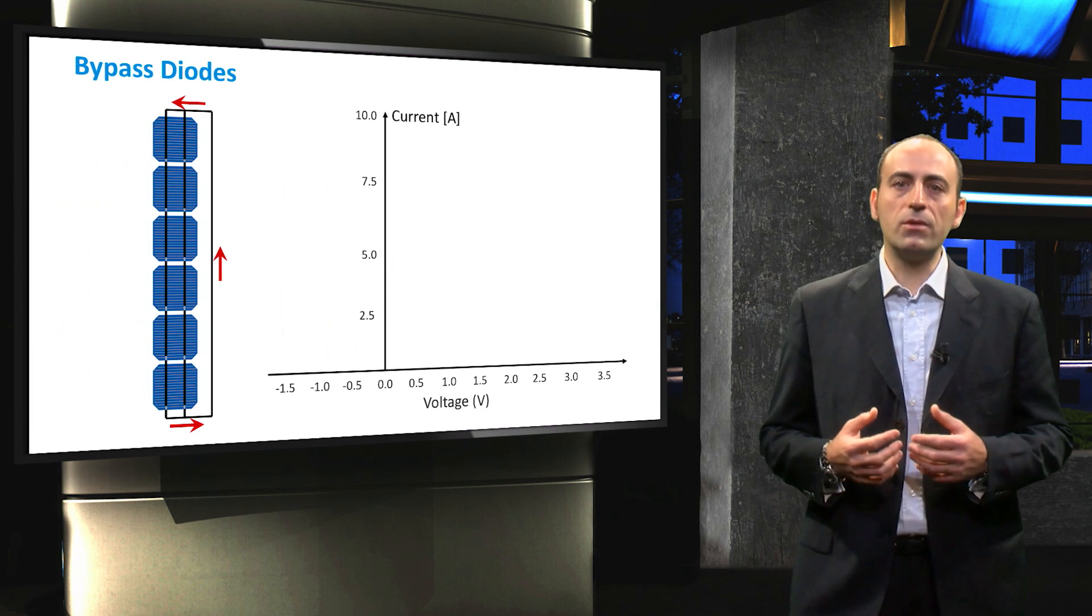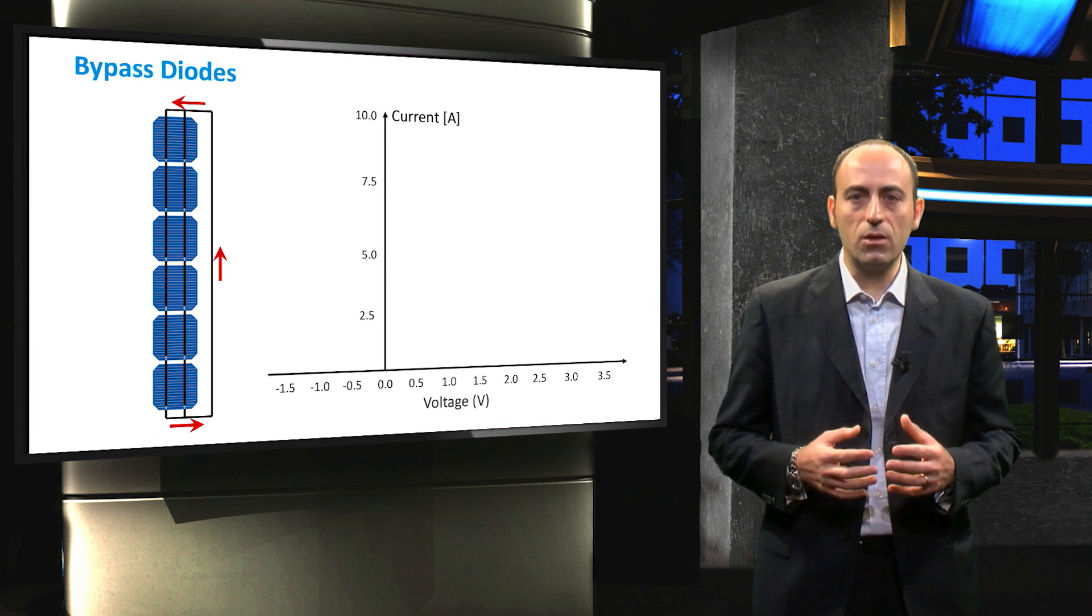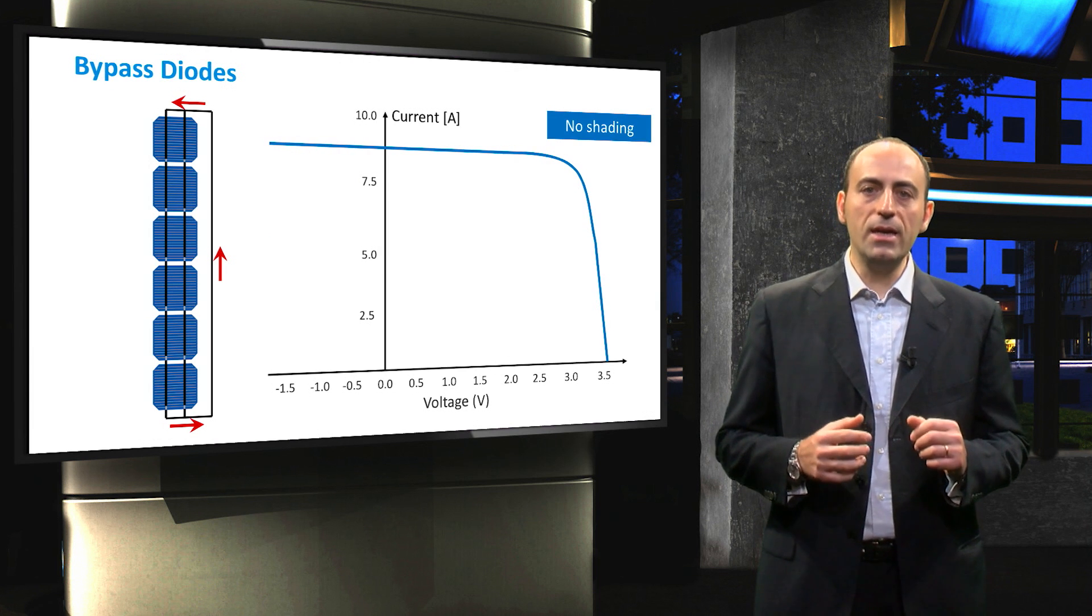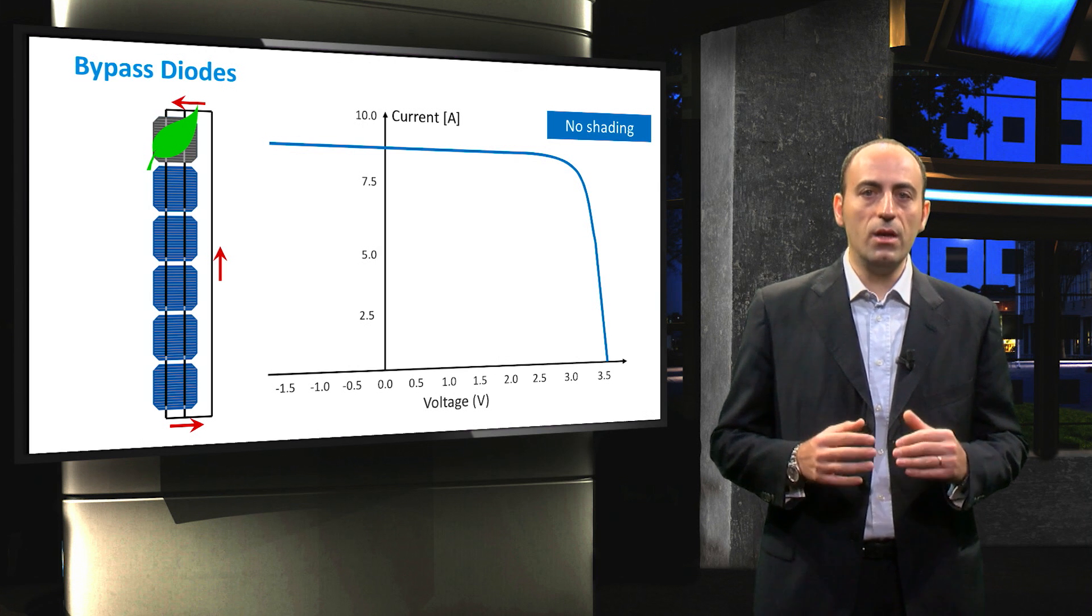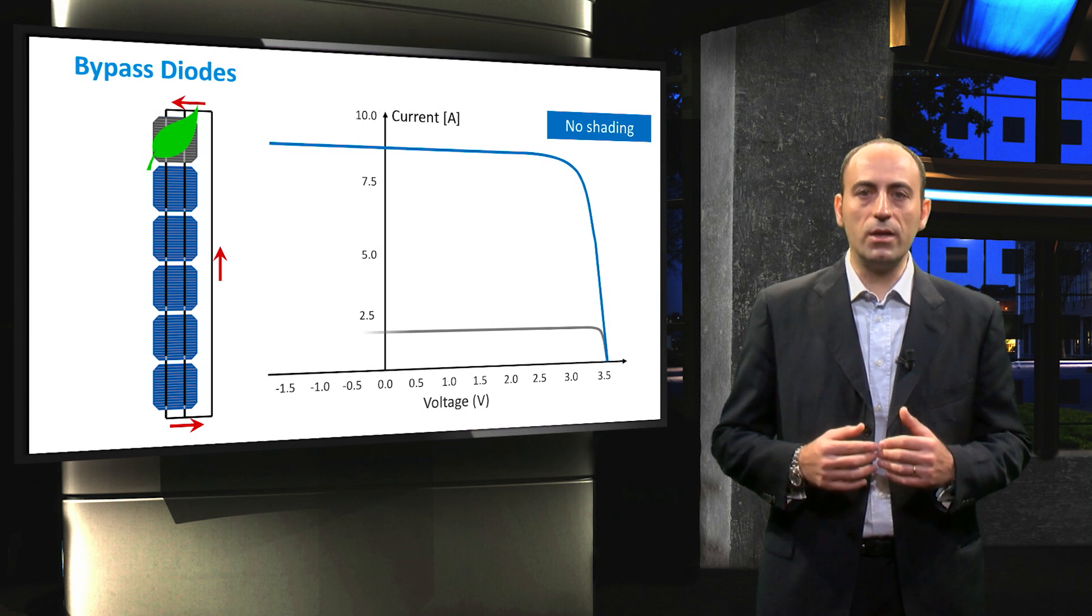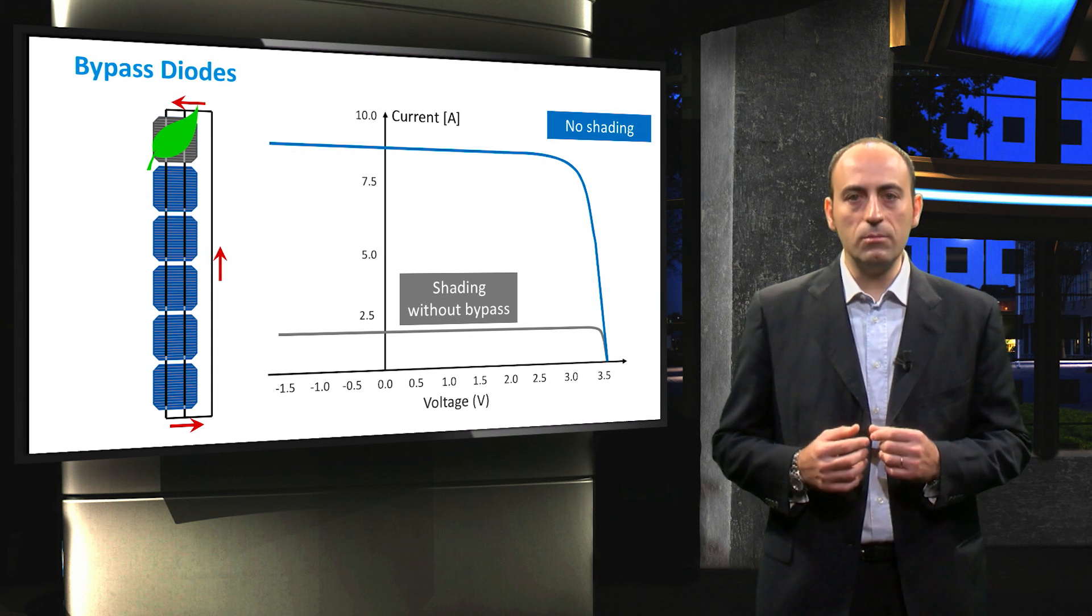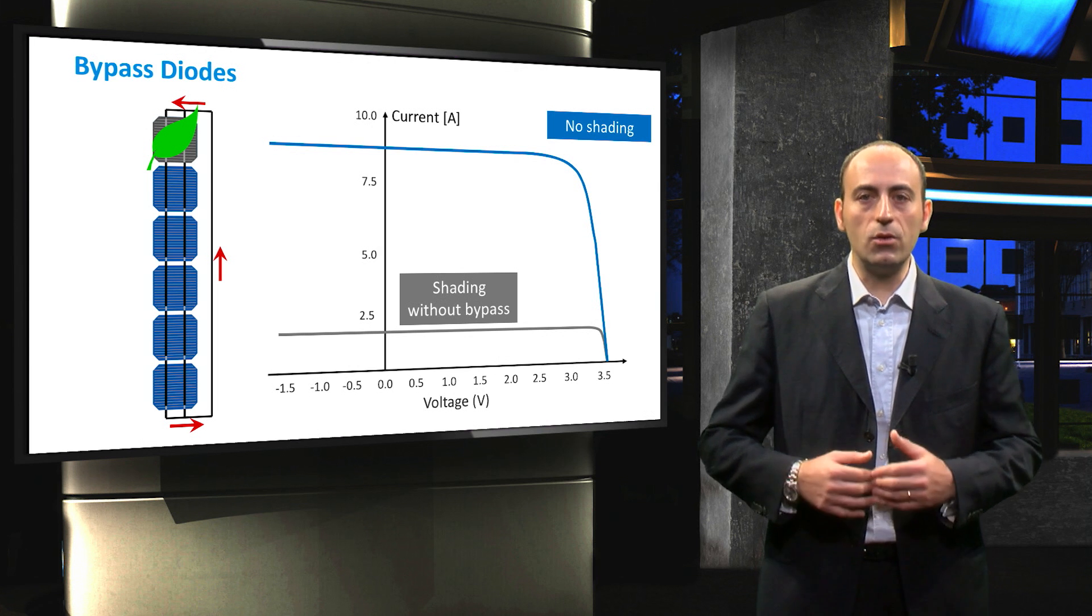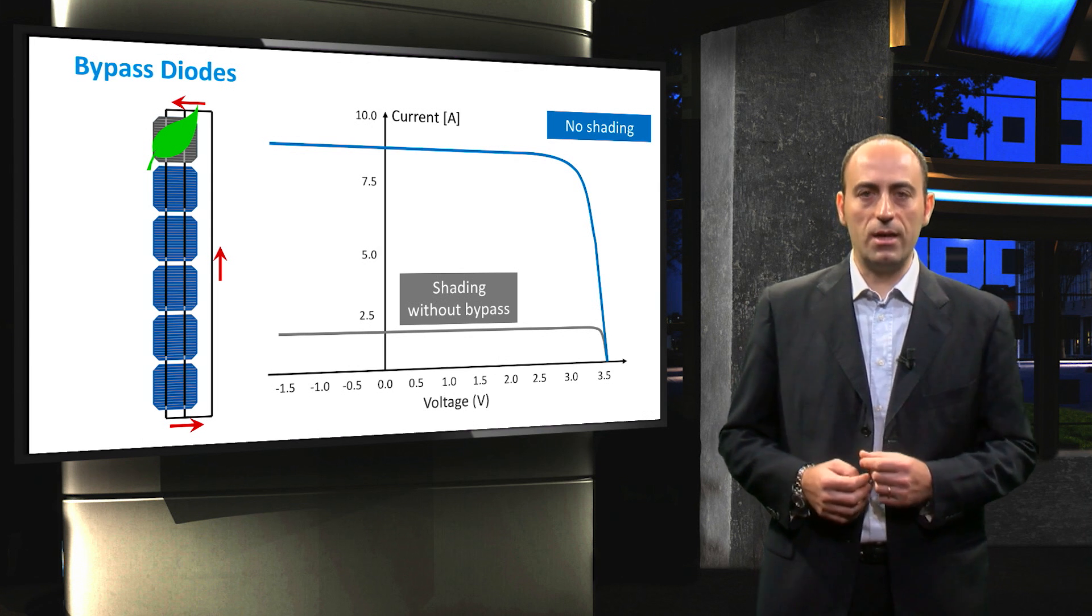Let's come back to the example shown at the beginning of the lecture and let's draw the IV characteristic of the string when cells are equally illuminated. In case one cell is completely shaded and there is no bypass diode, then the total current voltage characteristic just drops down with a total voltage that is more or less the same, but the maximum current is dictated by the partially shaded cell. In order to prevent that all the excess current would dissipate in it, we must use bypass diodes.